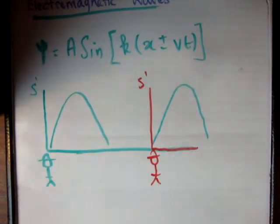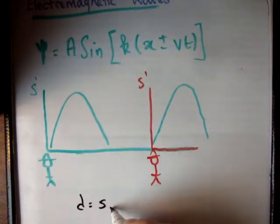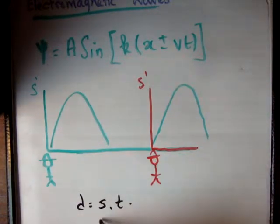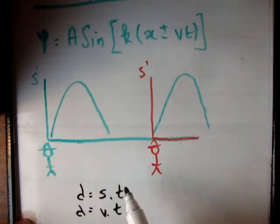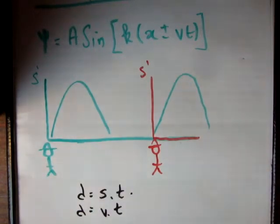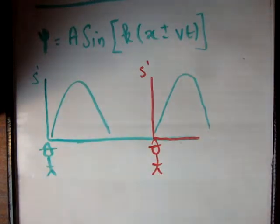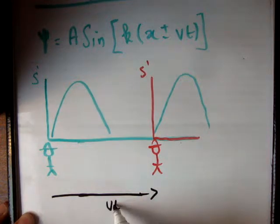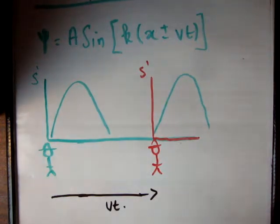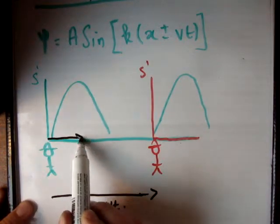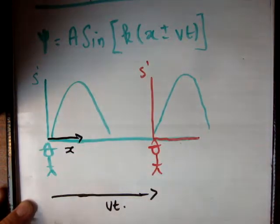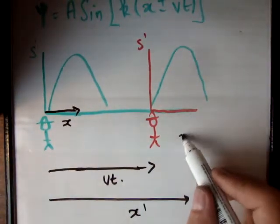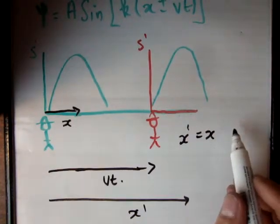There's another person with their own frame of reference, called S prime. How far has the wave moved? We know distance equals speed times time, so the wave of velocity v over time t has traveled a distance vt. The distance in one frame is x, and in the other frame it's x prime.